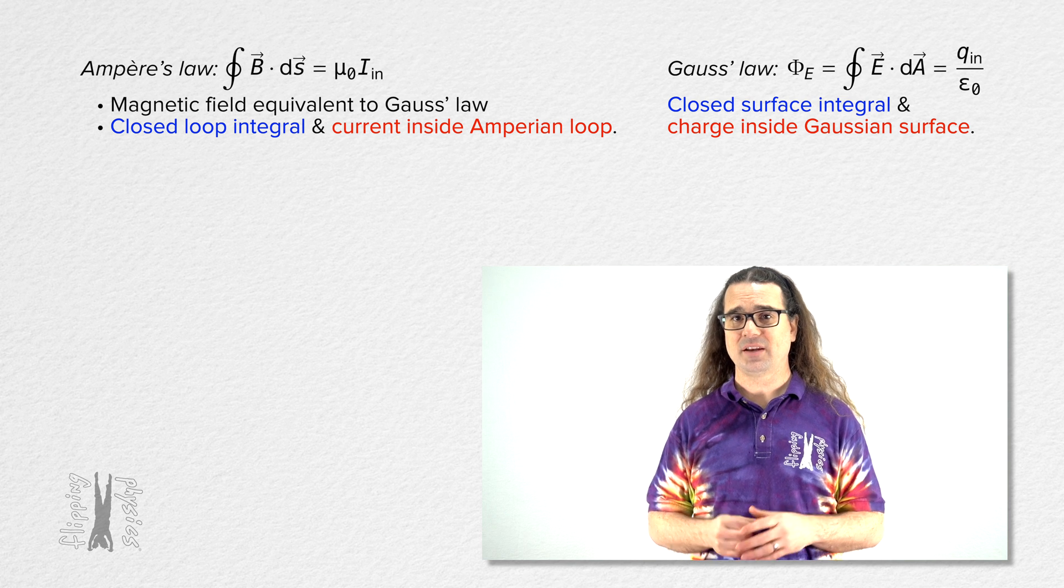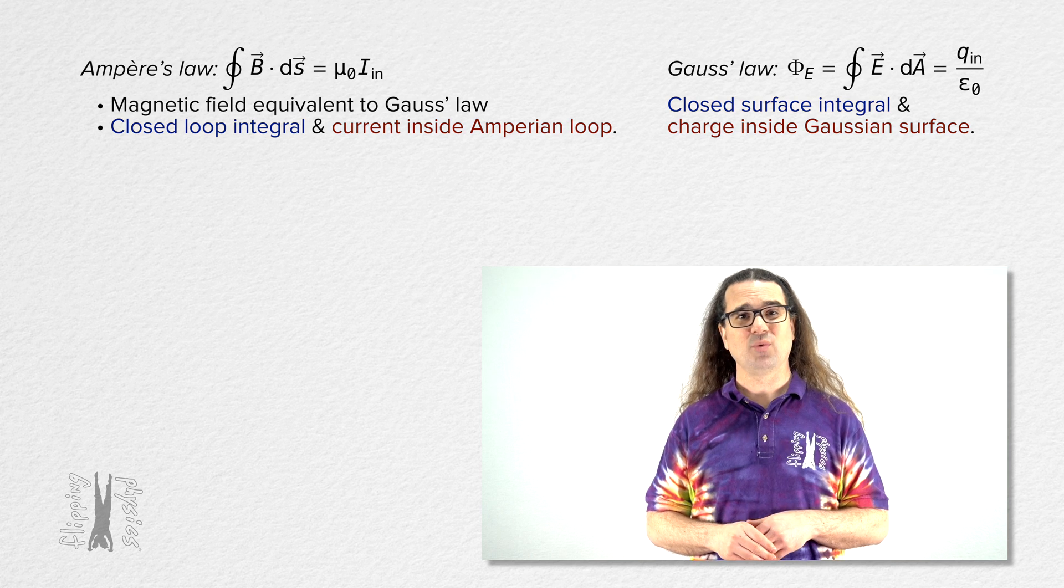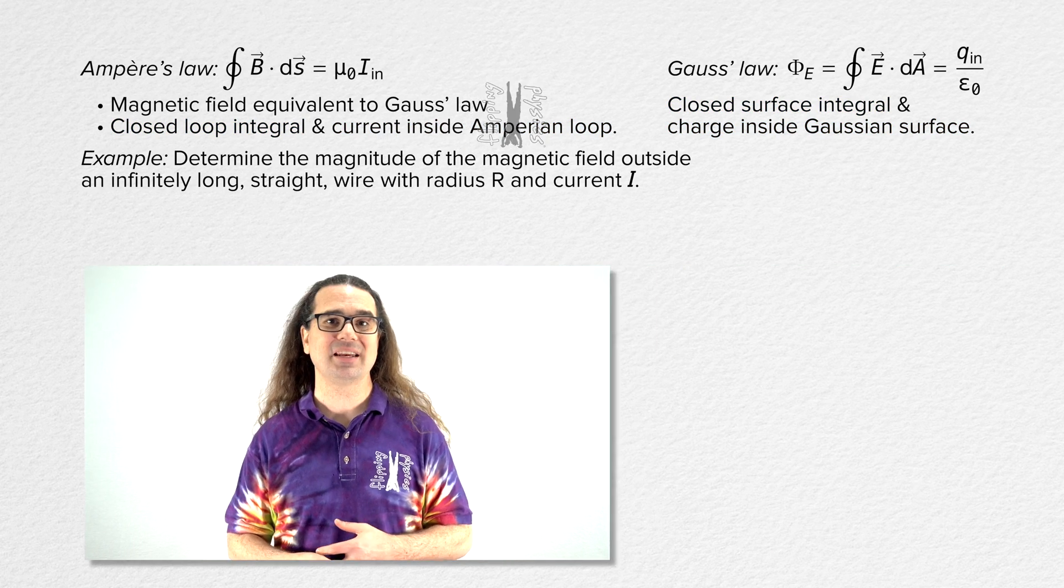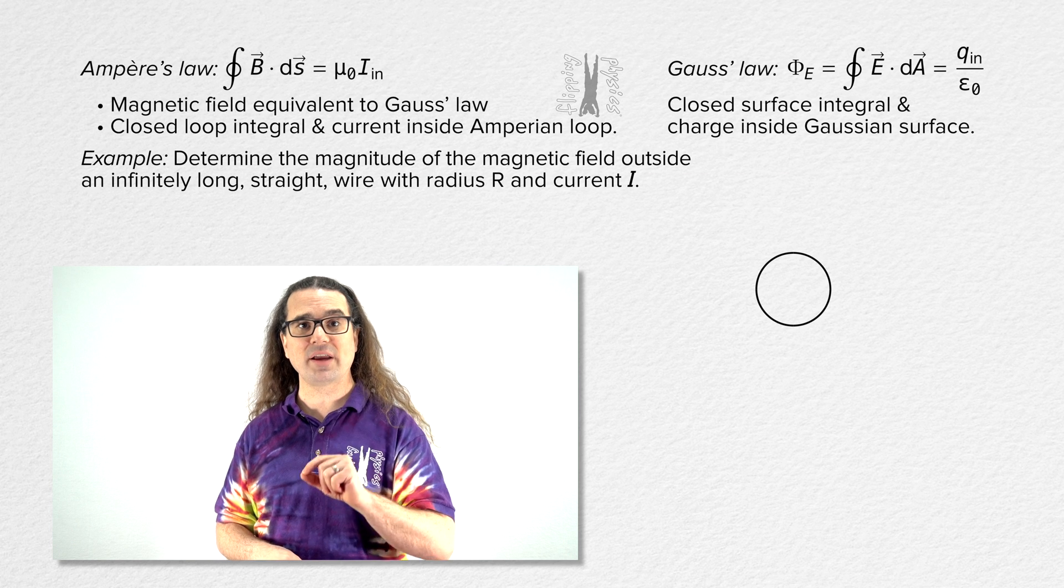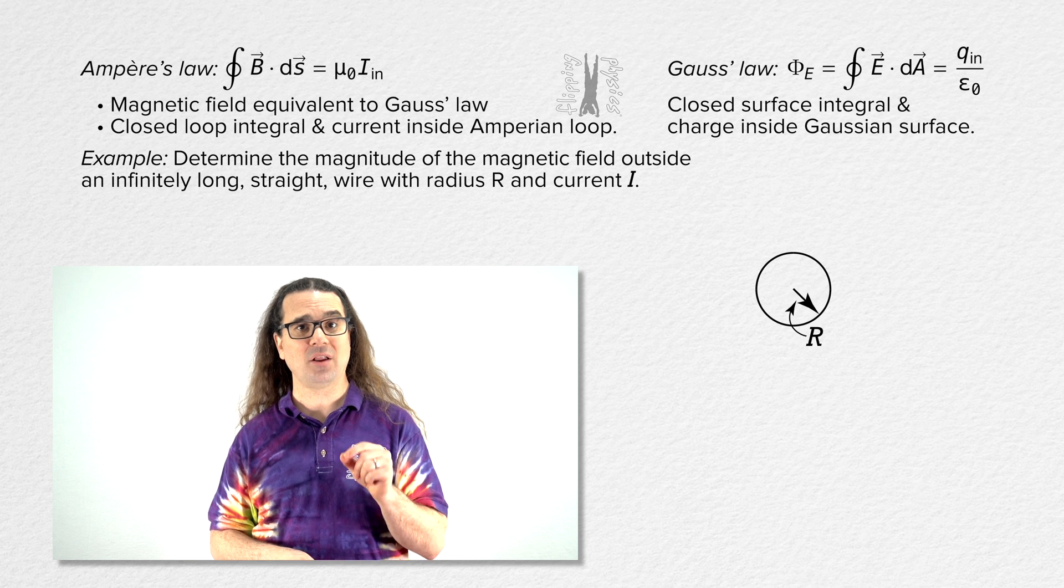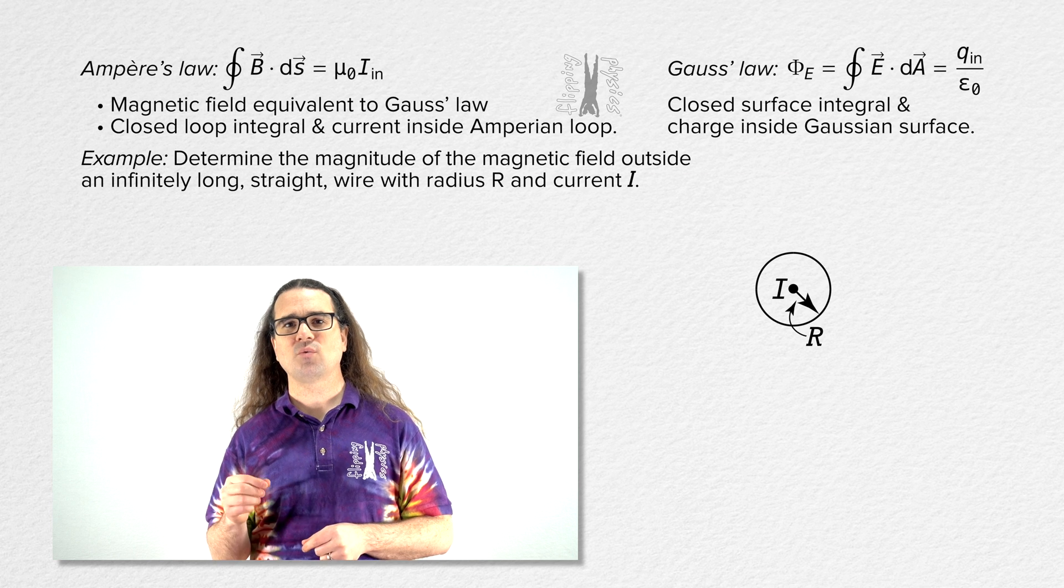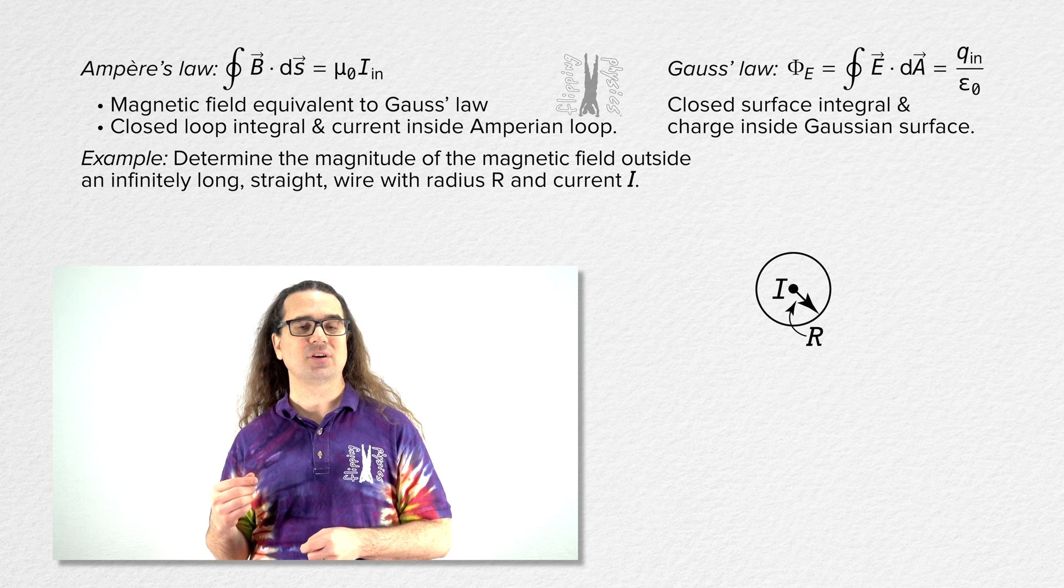I think the best way to understand Ampere's Law is with an example. So let's determine the magnitude of the magnetic field outside an infinitely long, straight wire with radius capital R and current capital I. I have illustrated the wire as having a current coming out of the screen.